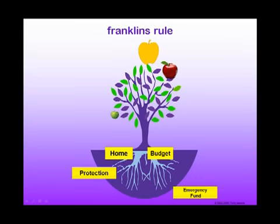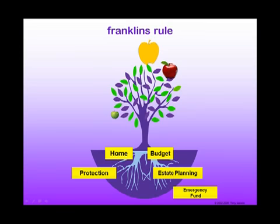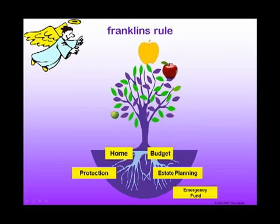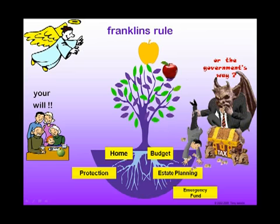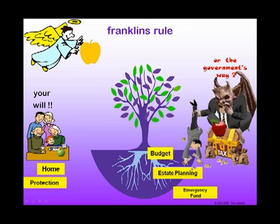The only thing that is certain in life is death and taxes. Estate planning is about making sure that before we become angels, we act to ensure that our choices and assets go to the right people in the right way at the right time. It makes sure that it's your will and not the government's way. You'll need to take steps to protect your family — things like getting a will, making sure that you've got powers of attorney in place, looking at superannuation nominations and understanding the tax implications of your decisions. All part and parcel of good estate planning.